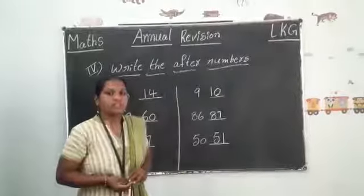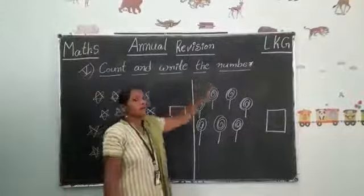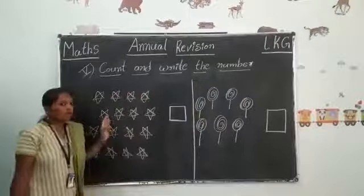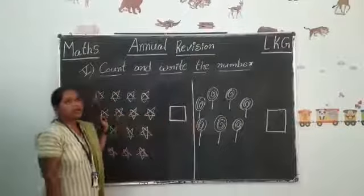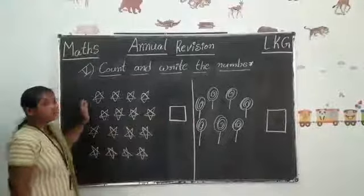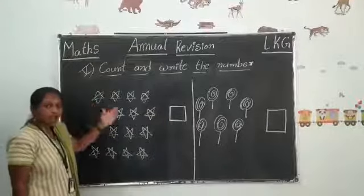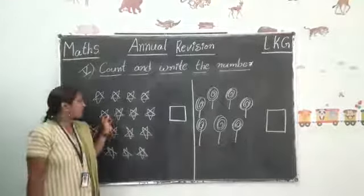Now next bit. Count and write the number. Look here all of you. Already I have given here some pictures. Okay. First you have to count the pictures. Now what are these? These are stars. Well how many stars are there? Come on, count children.